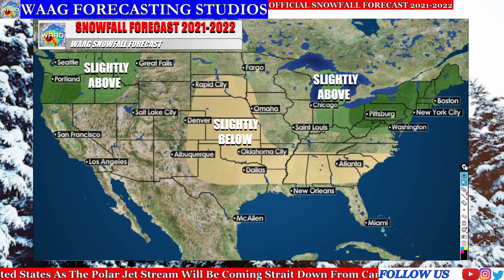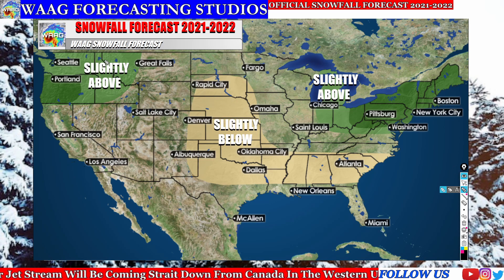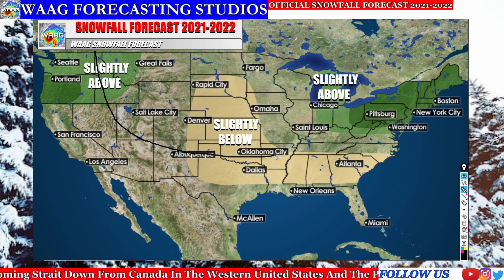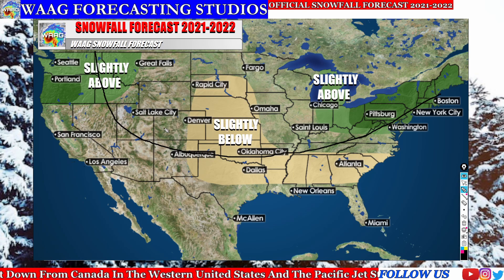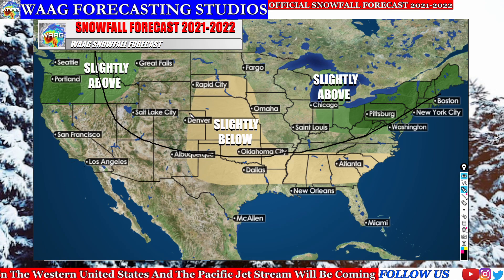What is going to be causing this is the jet stream pattern. We're going to have a wild jet stream pattern this winter that will vary at times, coming down through the western United States. This is the polar jet stream coming down through the western United States and then heading back up through the northeast, bringing cold air even into portions of Kansas, Oklahoma, and northern Texas. But this is going to be colder, drier air.